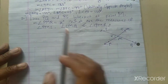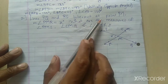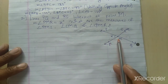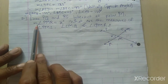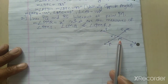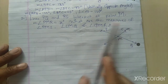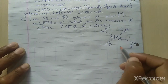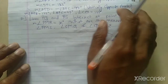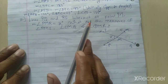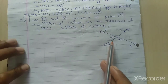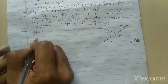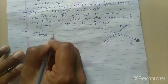Next question: lines PQ and RS intersect at point M. The measurement of angle PMR is X degrees. We have to find the measurement of angles PMS, SMQ, and QMR. Solution: measurement of angle PMR equals X degrees, which is given.